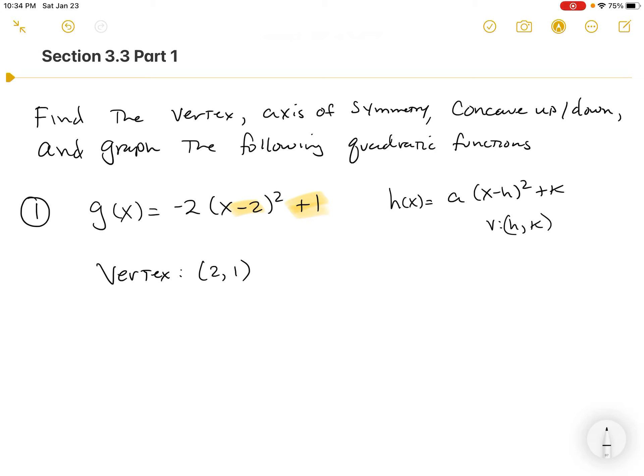Maybe you don't know what the axis of symmetry is. The axis of symmetry is actually really easy. The axis of symmetry is always an x equals equation, and it's always x equals the x coordinate of the vertex. So if you got the vertex correct, you'll get the axis of symmetry correct.